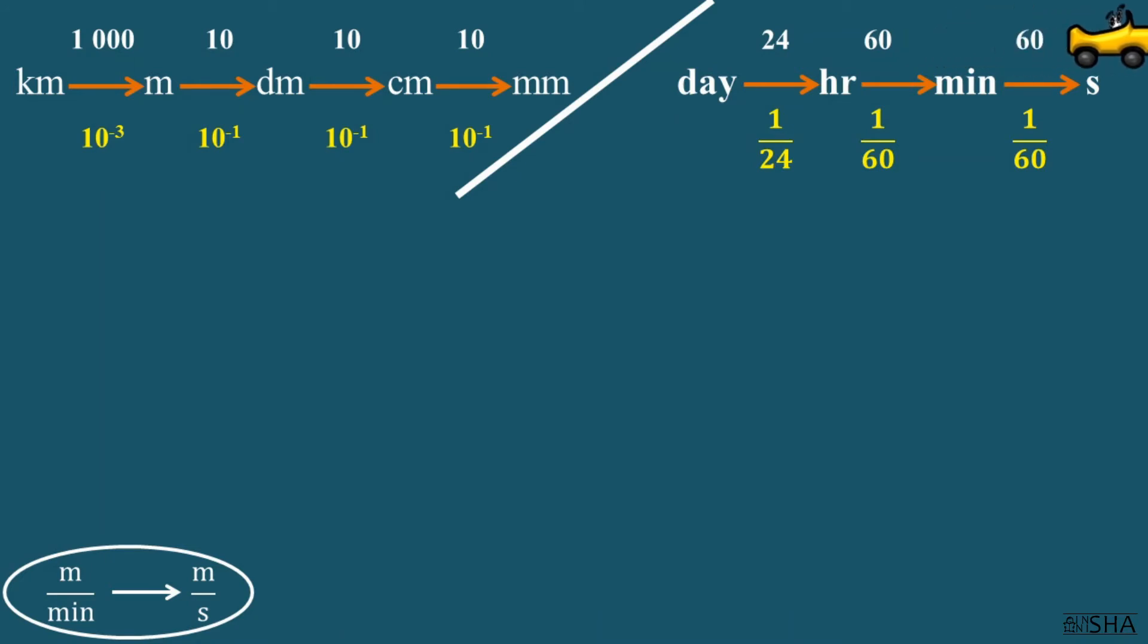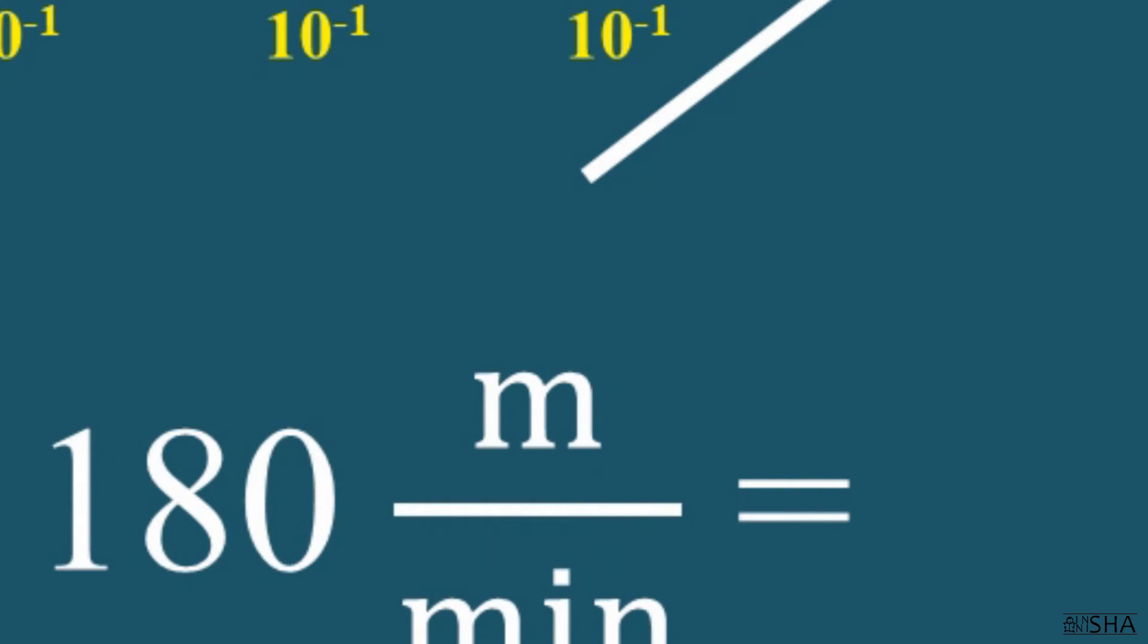Convert 180 meters per minute to meters per second. Look. Here on the contrary, the units of length are already given in meters. This means that there is no need to convert them.